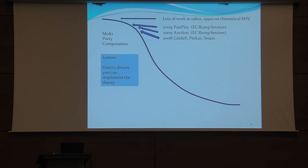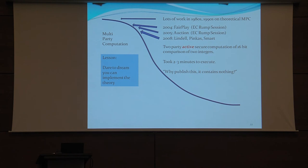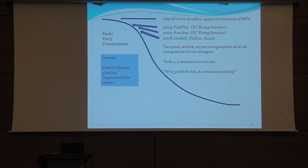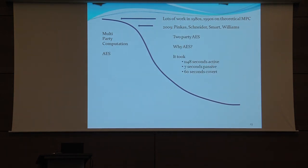So then me, Yehuda and Benny started working. What we actually did is we did the first actively secure computation — we compared two 16-bit numbers and it took two to three minutes to compute. I sent the email to Yehuda: 'We've done it. It's completed. Let's write the paper.' And Yehuda said, 'Why? It doesn't contain anything.' He said all he'd done was answer my stupid questions about oblivious transfer, and I said all I'd done was implement his stupid answers. And this is kind of the point where actively secure stuff starts.